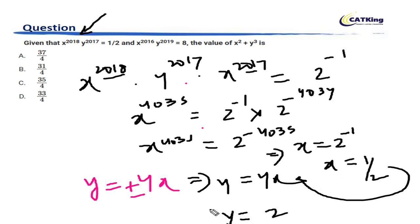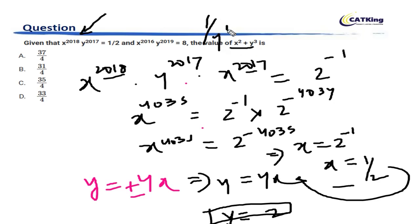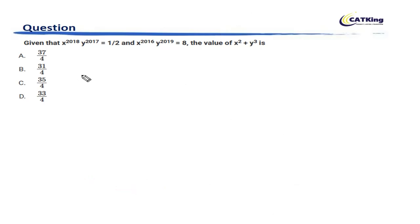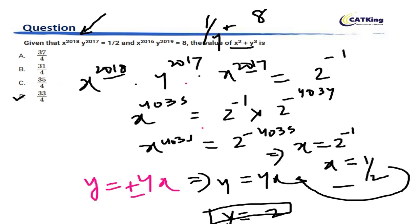And putting X equals 1/2 back in, Y becomes equal to 2. So with X equal to 1/2 and Y equal to 2, X squared becomes 1/4, Y cubed becomes 8, and the final value becomes 33/4. This is a very simple question.